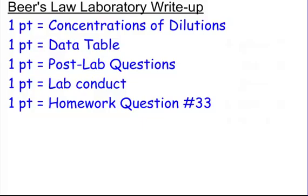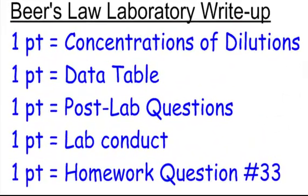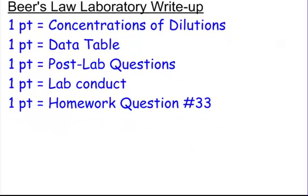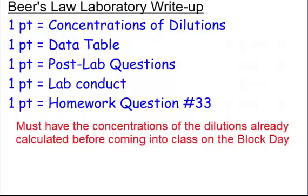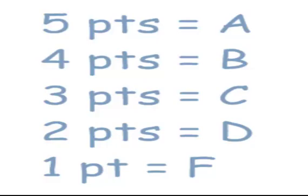Here's how you'll be graded for your Beer's Law laboratory write-up: one point for the concentration of your dilutions, one point for your data table, one point for post-lab questions, one point for lab conduct, and one point for homework question number 33 — completed before you leave the room. The concentrations of your dilutions must be done before you walk in; if not, you lose a point and start with a B. Five points is an A, four a B, three a C, two a D, one an F.